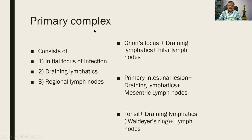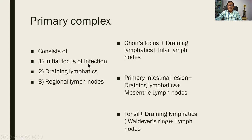What is the primary complex? A primary complex consists of the initial focus of infection, the draining lymphatics, and the regional lymph nodes.